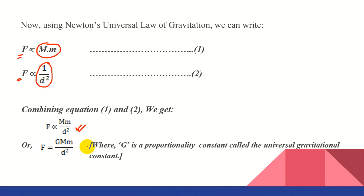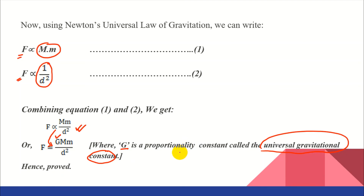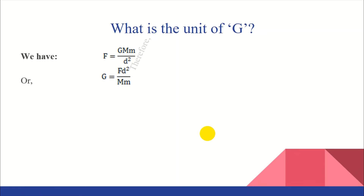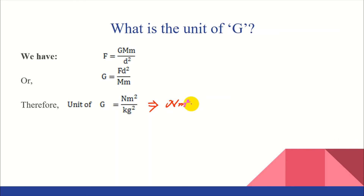F equals GMm by D squared. Here, G is the proportionality constant. In order to replace the proportional sign with an equals sign, we need a constant. That constant is capital G written in the numerator — that's the rule. In our formula, it is the universal gravitational constant. Hence the formula F equals GMm by D squared is proved. Now, what is the unit of G? From F equals GMm by D squared, we get G equals FD squared divided by Mm. Therefore, the unit of G is Newton meter squared per kilogram squared, also written as N·m²/kg².